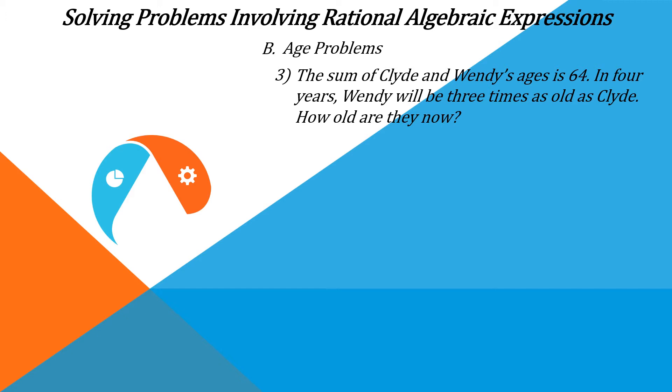Now, in this problem, it is a comparison of ages of Clyde and Wendy. And according to the problem, the sum of their ages is equal to 64. And in 4 years, Wendy will be 3 times as old as Clyde. How old are they now?